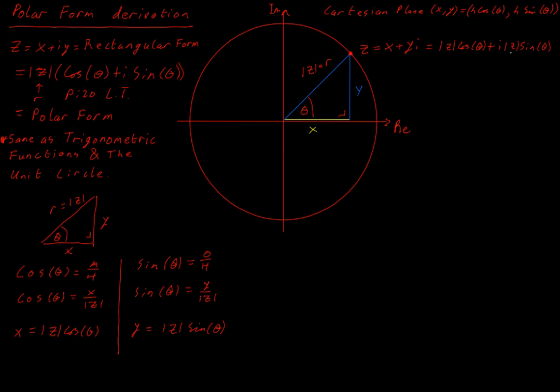But regardless of that, we have a common factor of the modulus of Z. So to get to where we looked at at the beginning, we have modulus of Z times cos of theta plus i sine theta. And that is our polar form derived.